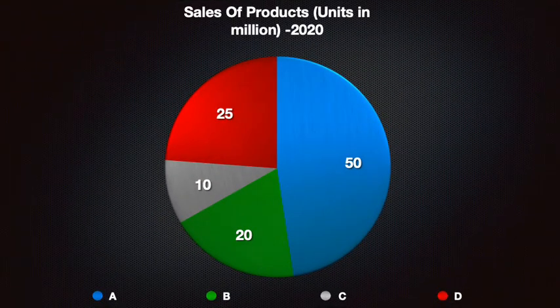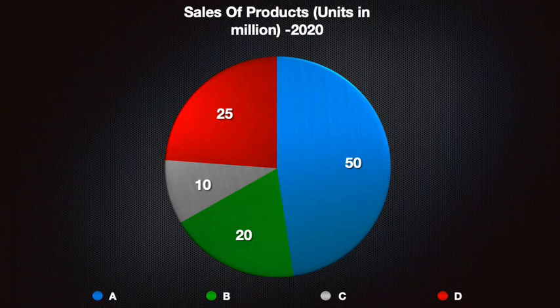This is another very common type of chart. This pie chart shows the sales in millions of four different products in 2020. Product A is the biggest seller, selling 50 million units. They are followed by product D at 25 million units.